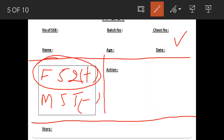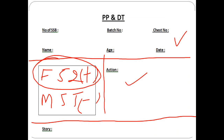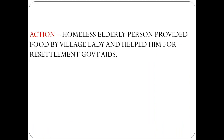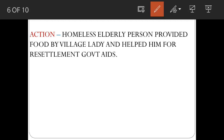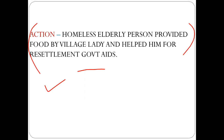Now we will see the action part. The action of my story is: a homeless elderly person is provided food by a village lady and helped for resettlement through government aids. This is the action of my story. The action should be long and at least one and a half lines, because if you are not able to complete the story, your action should give out the entire theme and the brief crux of the story.